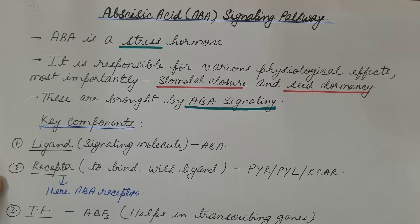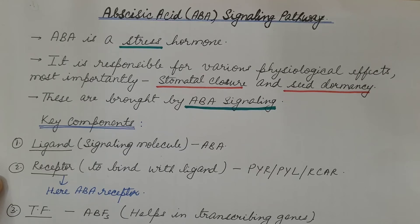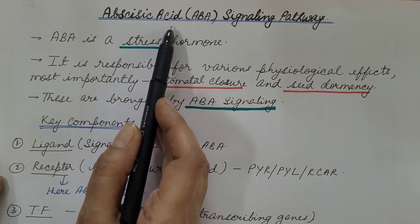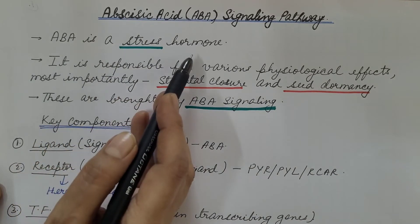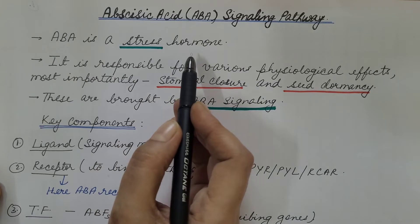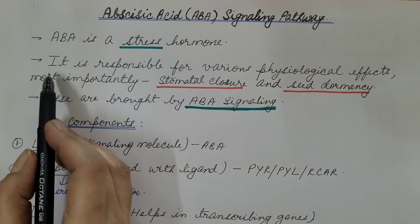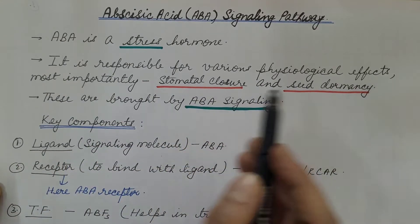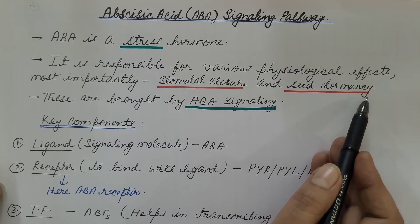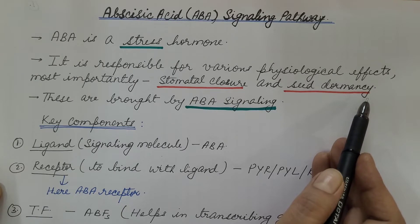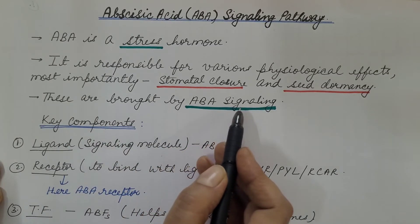Hello friends. In the last two videos we discussed about abscisic acid phytohormone — its introduction, discovery, chemical nature and structure, distribution in plants, physiological effects, and biosynthesis. Today in this video we are going to discuss about abscisic acid signaling pathway. We already know that it is a stress hormone that accumulates during unfavorable conditions like water deficiency, high temperature, and others. It is responsible for various physiological effects, most importantly stomatal closure and seed dormancy.